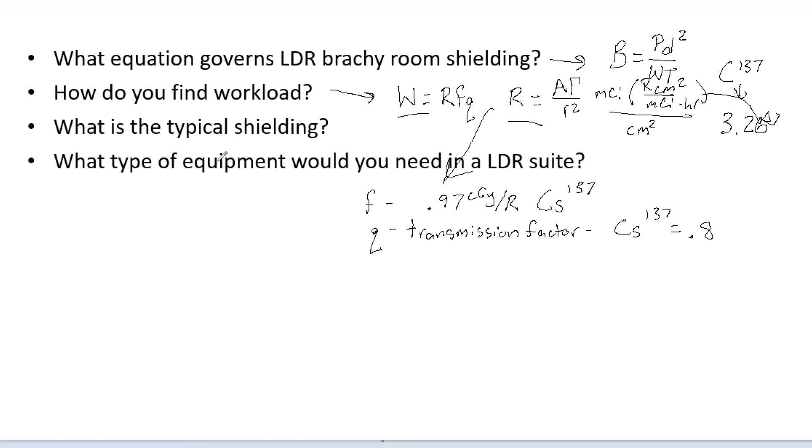So now the typical shielding, how do you determine it and what is it. So like our other shieldings we are just going to use n equals negative log b and that is going to give us how many TVLs we need.